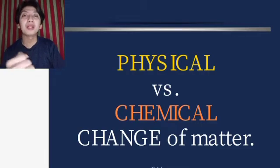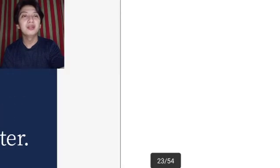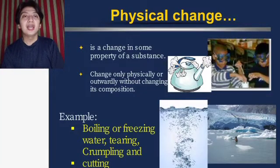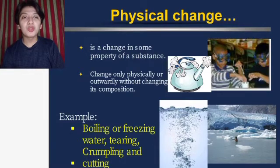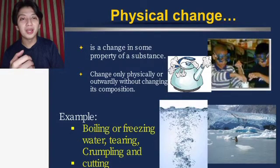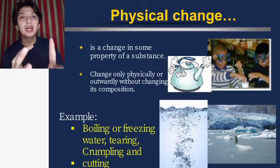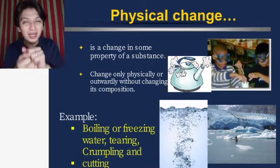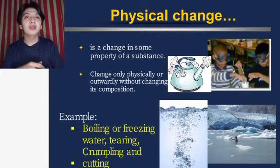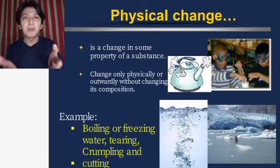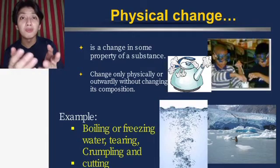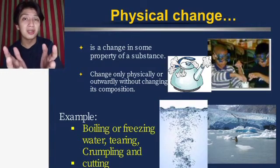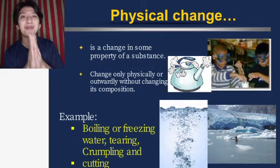Physical change is a change in some property of a substance — changing only physically or outwardly without changing its composition. Examples include boiling water, freezing water, and tearing, crumpling, or cutting paper. Whatever you do to the paper — crumple it, cut it, tear it — it is still paper. It just changed its form but not its composition.